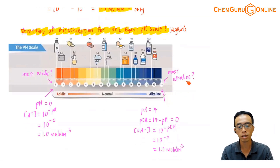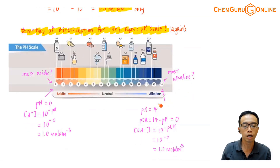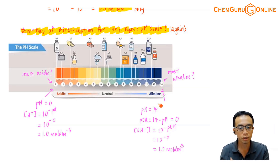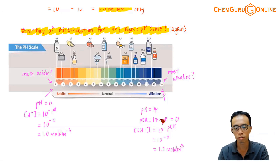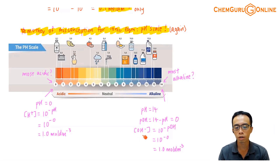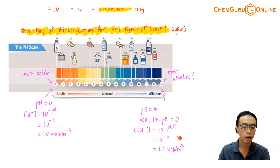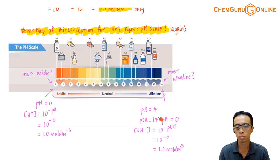Conversely, if I consider the base, the idea is exactly the same. If I have pH 14, how do I determine the corresponding OH⁻ concentration that gives pH 14? Assuming standard conditions, I convert pH to pOH using the formula pH + pOH = 14. So pOH = 14 minus pH = 14 minus 14 = 0. The corresponding OH⁻ concentration that gives pOH = 0 is 1 mol per dm³. Again, that is not very high — I can add more OH⁻ and increase the concentration above 1 mol per dm³, making the pH greater than 14. So there is no reason why pH is limited at 14.